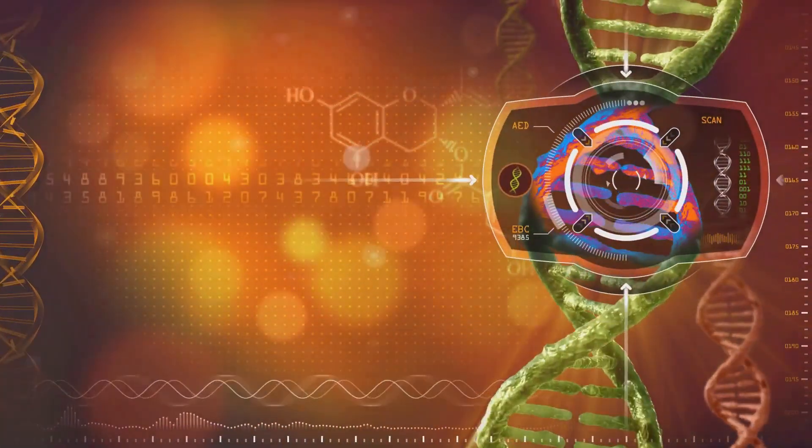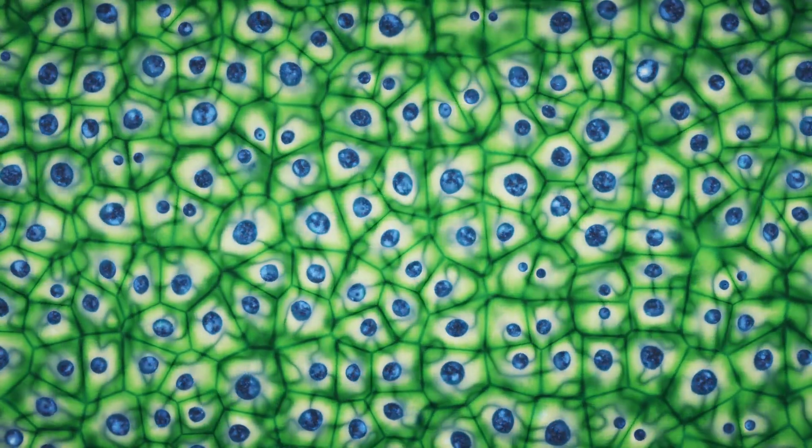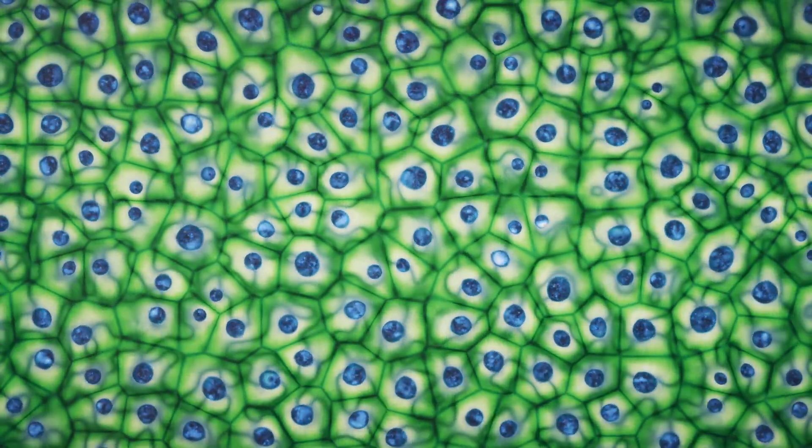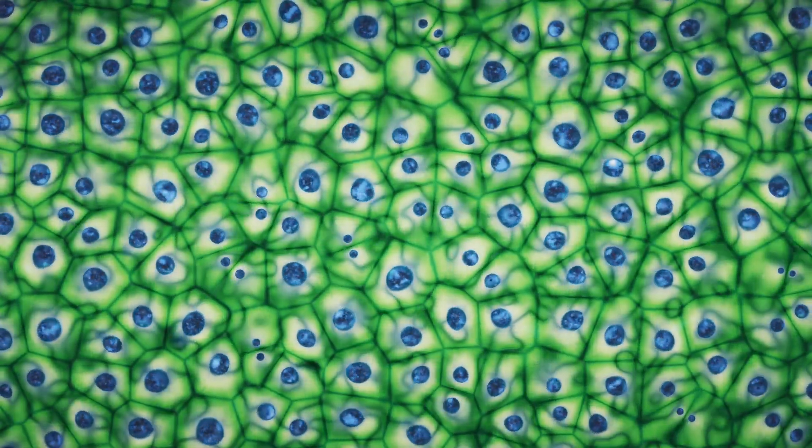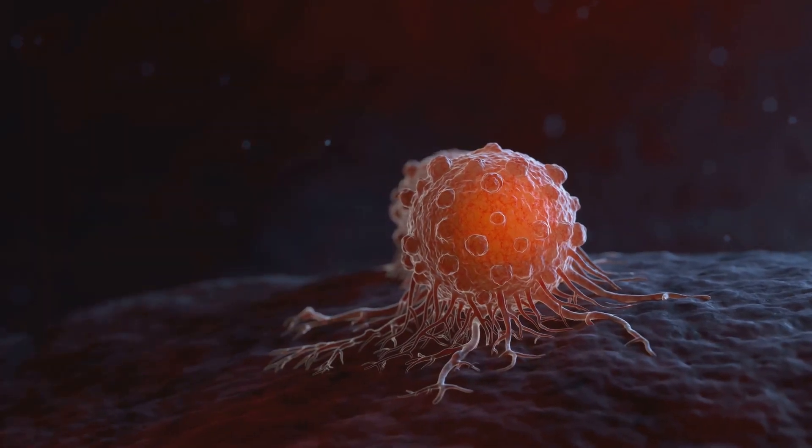This uncontrolled MIC activity has disastrous consequences for the cell. The overabundance of MIC protein sends the cell into overdrive, promoting uncontrolled cell growth and proliferation. This relentless division can lead to tumor formation and cancer progression.